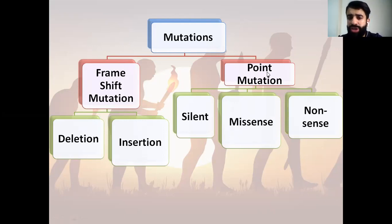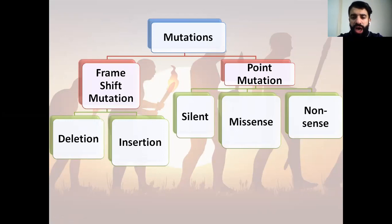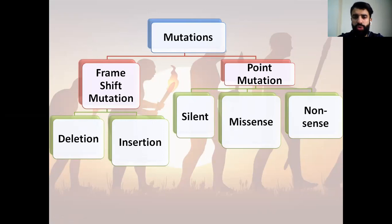Point mutation is divided into silent — the meaning of silent is that it will lead to no change in the sequence of the amino acid. So no change, no detectable change will appear.